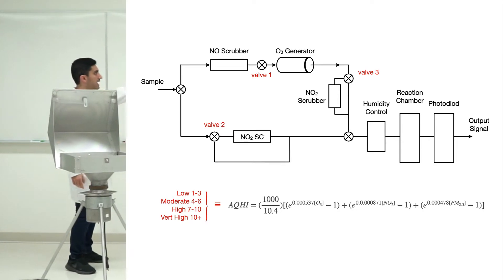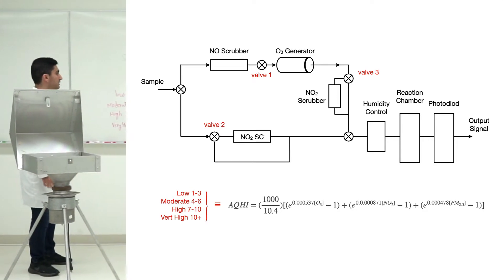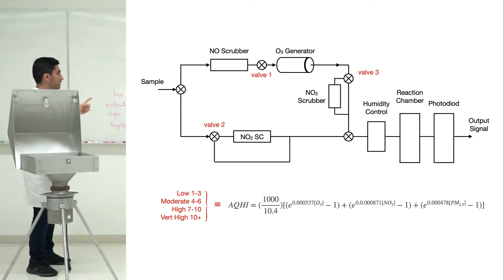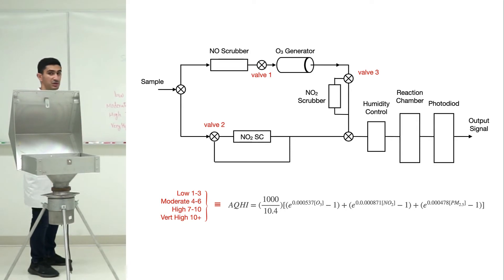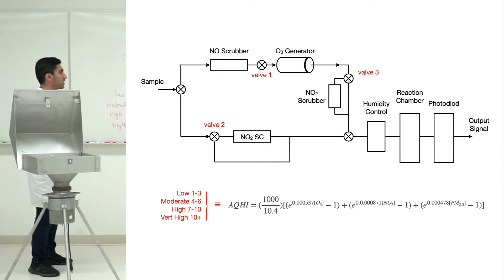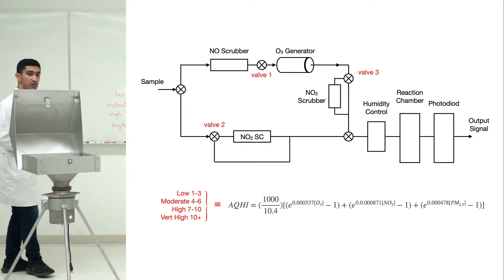We have three valves as indicated here. By switching the valves, you can let the air go through the scrubbers or bypass them. We have an NO scrubber, NO2 scrubber, and an ozone generator.